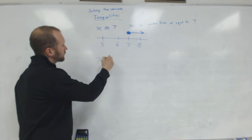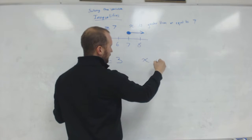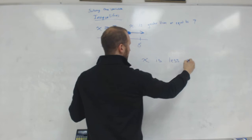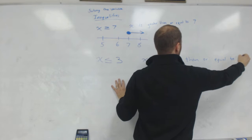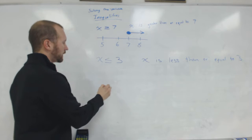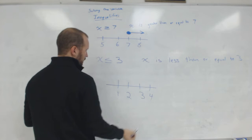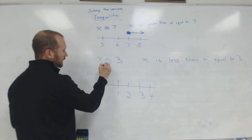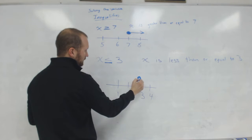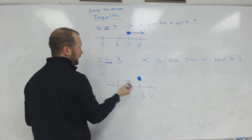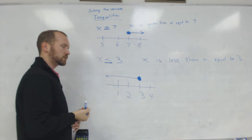The last symbol is less than or equal to. We would read this as X is less than or equal to 3. We're going to show that with a solid dot, because anytime we see the line underneath — whether greater than or less than — that indicates a solid dot. Since this one is less than or equal to 3, the arrow goes back to the left.